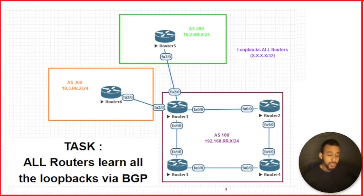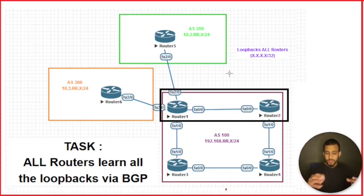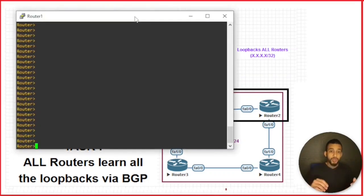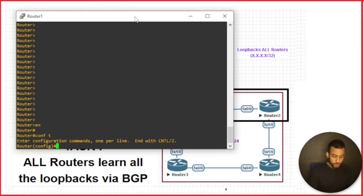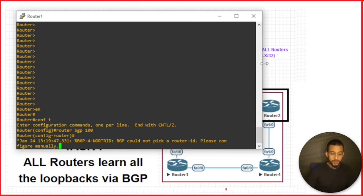To get us started, let's focus on this portion of the network - just two routers connected with each other - and we are going to try and make them neighbor up using BGP. Let's start with router 1. To configure BGP we need two commands. The first one is 'router bgp' and the autonomous system number that router belongs to. In this case it's autonomous system 100, and we get an error message saying BGP could not run because it cannot pick a router ID.